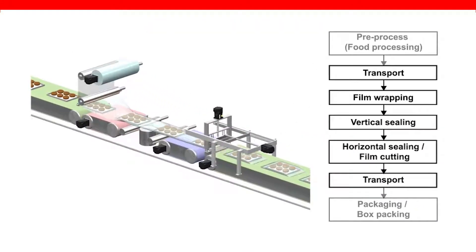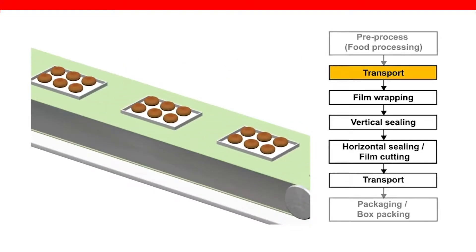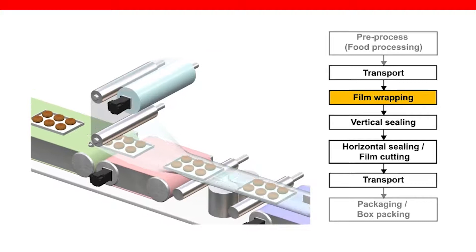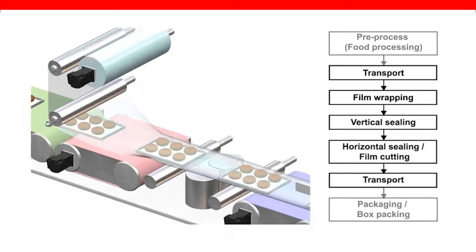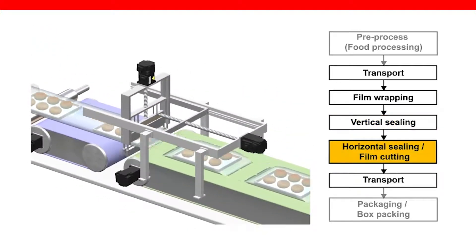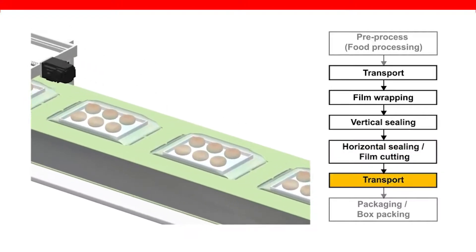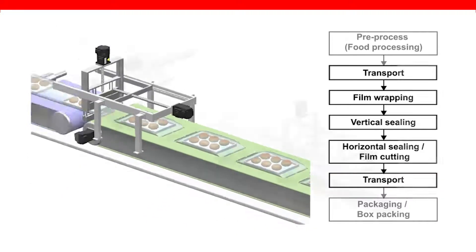Let's take a close look at this horizontal form-fill seal machine operating process. The product is introduced from a production area on the initial transport section. Film is introduced to the product which starts the sealing process, first with the vertical seal and then quickly followed by a horizontal seal. At the same time as the horizontal seal, there is a product separation cut made. Soon after, the product is transported again to be packed further.